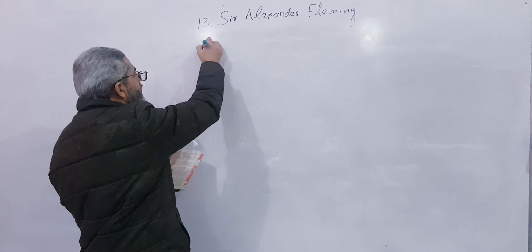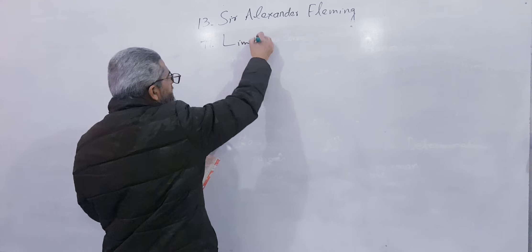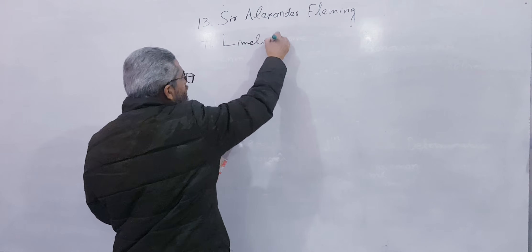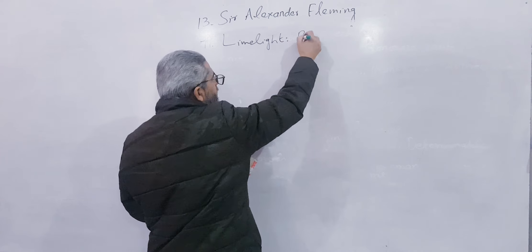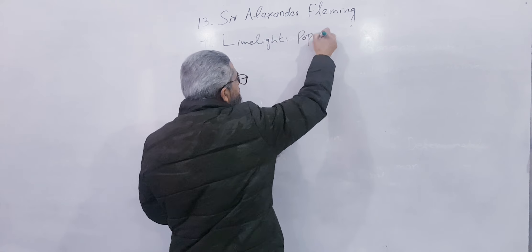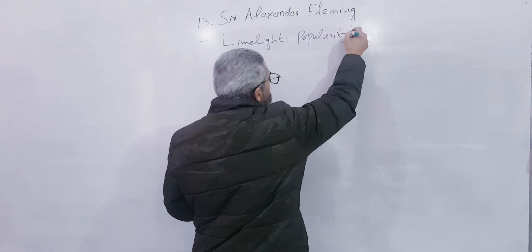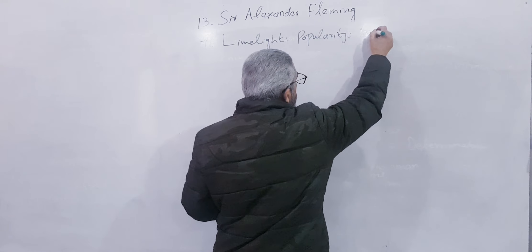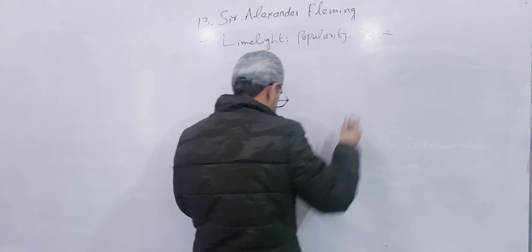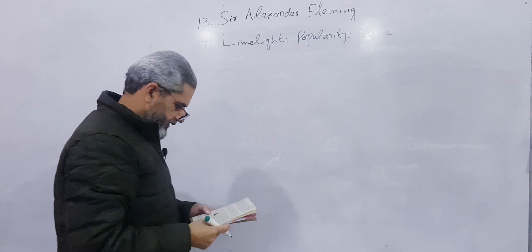Number 71: Limelight. Limelight means shuhrat (fame). Write popularity, or fame, F-A-M-E.